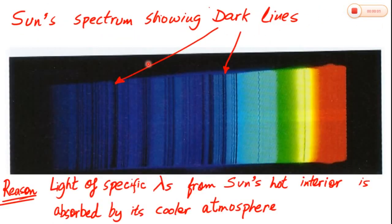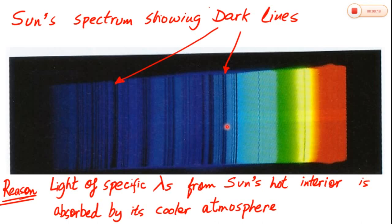When the light from stars like the sun is analyzed, we observe an absorption line spectrum. Light of all wavelengths in the visible range is emitted, as the interior of the sun is very hot. This light has to pass through the cooler outer atmosphere or layers of the star. The cooler atmosphere absorbs some specific wavelengths, showing dark lines in the sun's spectrum as shown in this diagram.